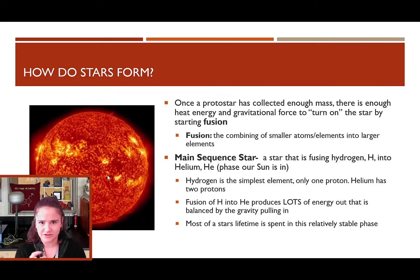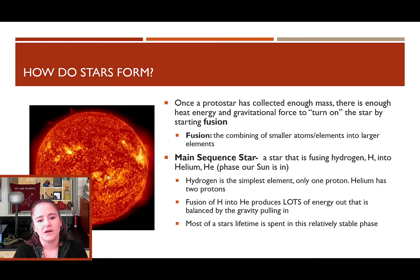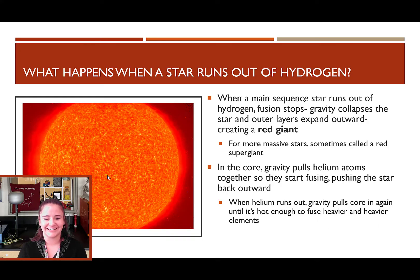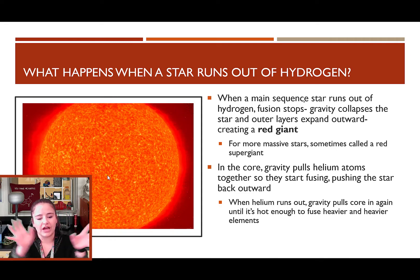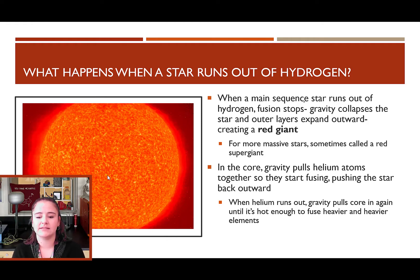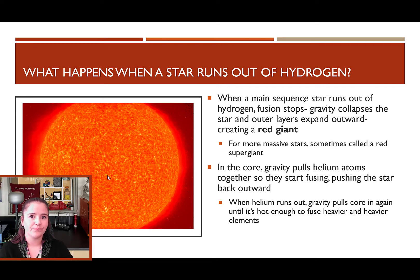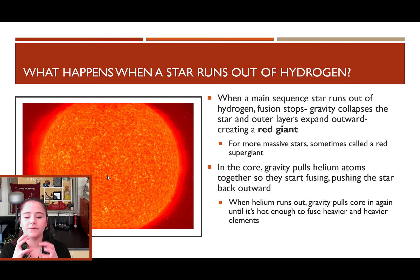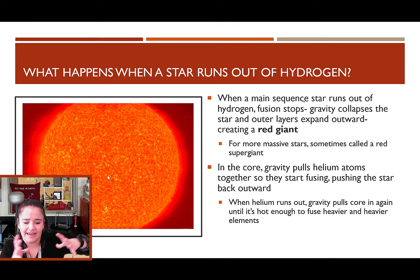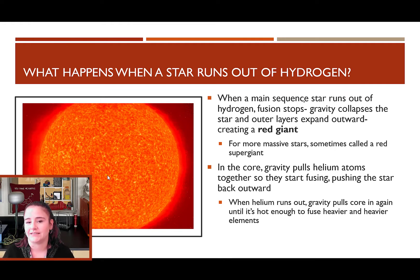The star keeps fusing hydrogen to helium, but what happens when it runs out of hydrogen? With no more fusion energy pushing outwards, gravity wins and collapses the star inward. When the star collapses, it often loses control of its outer layers, which expand outward. This creates a red giant — or for the most massive stars, a red supergiant.